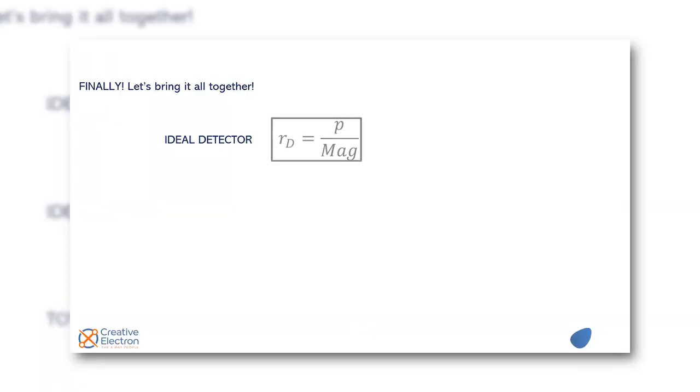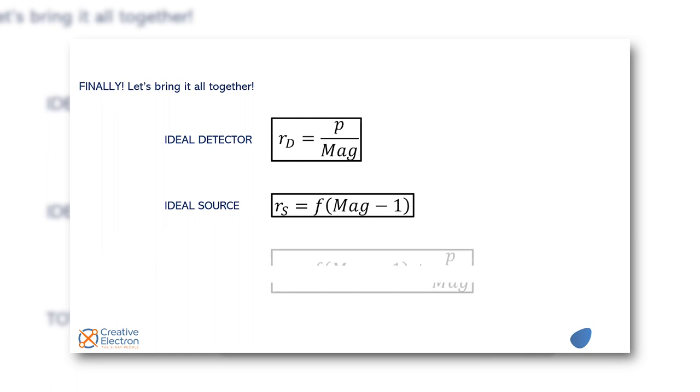So let's finally bring it all together, that's what we've been waiting for. Ideal detector we have that resolution is equal to p which is pixel size divided by magnification. Ideal source we're going to have that the resolution is equal to F which is the focal spot size on the source times magnification minus one. And put it all together we add it all, resolution is going to be F mag minus one plus p divided by magnification. So what does that look like in a real system?